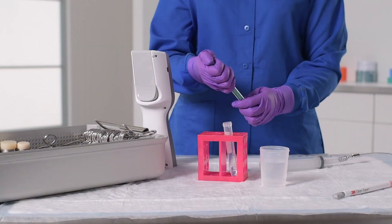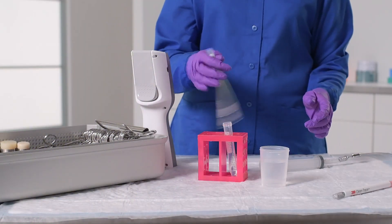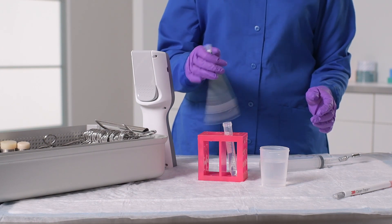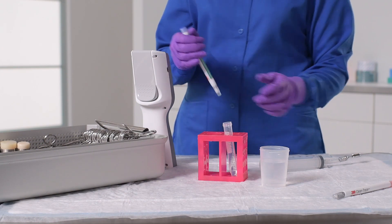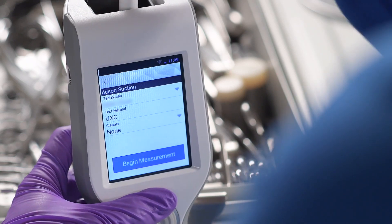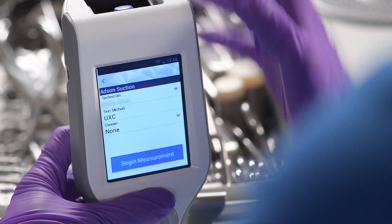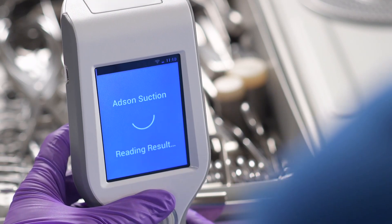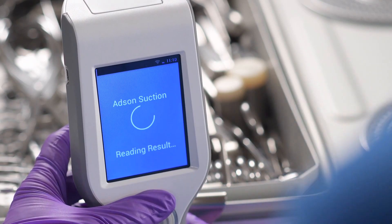The CleanTrace system uses an enzyme that converts ATP to light, invisible to the naked eye, but easily read by the CleanTrace Luminometer LX25. The result is expressed as a relative light unit, or RLU, which represents the amount of clinical soil on the surface or device.